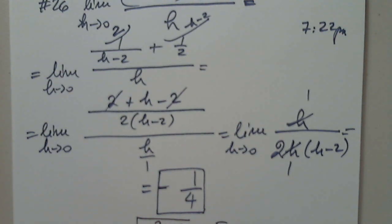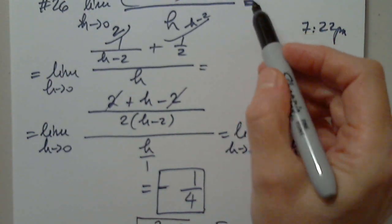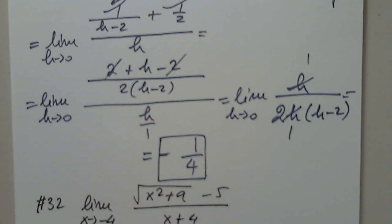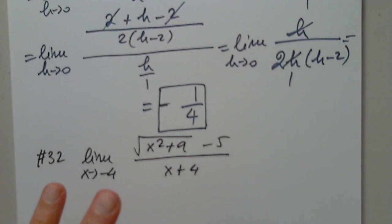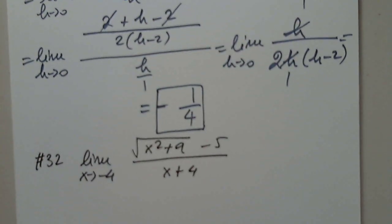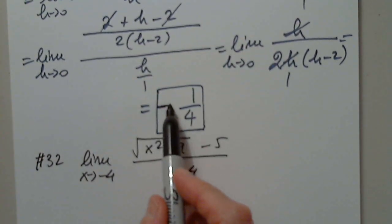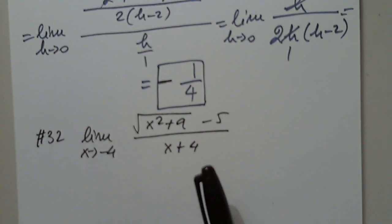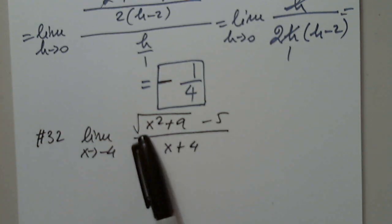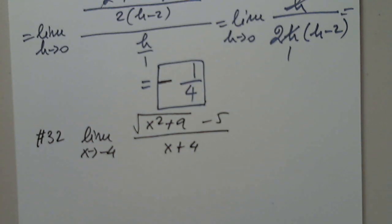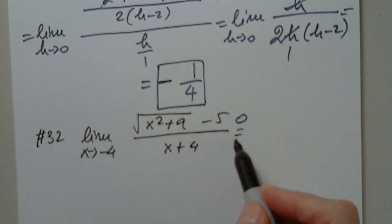Actually, it is still 0 over 0. We always plug it in first. I skipped that step and I apologize — I should not have. We always plug it in to see what to expect or what type of limit we are facing, because there are many different types. So again, here: 16 plus 9 is 25, the square root of 25 is 5, 5 minus 5 and negative 4 plus 4 — obviously it is 0 over 0, so there is hope.